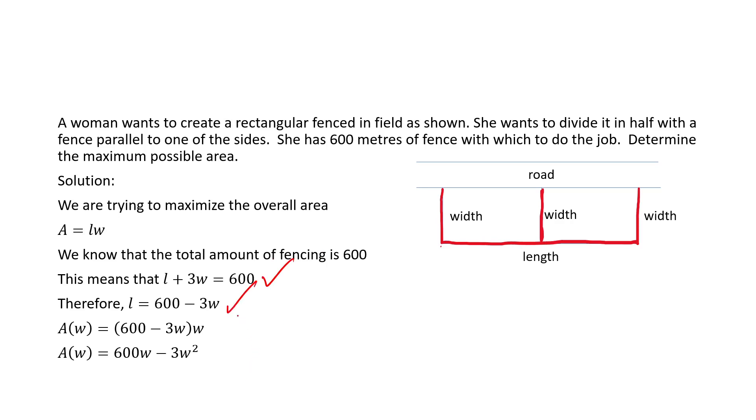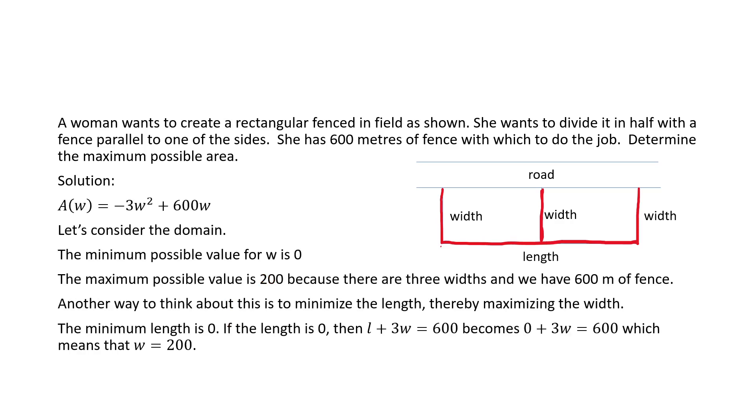So L would be 600 minus 3W, ultimately leading us to an area formula of 600W minus 3W squared. But our domain would no longer be 0 less than or equal to W less than or equal to 300. It would actually become 0 less than or equal to W less than or equal to 200, because our maximum value for W would have to be 200. Because if we let the length be its minimum value of 0, we would need 3W to equal 600, which means W would be 200.